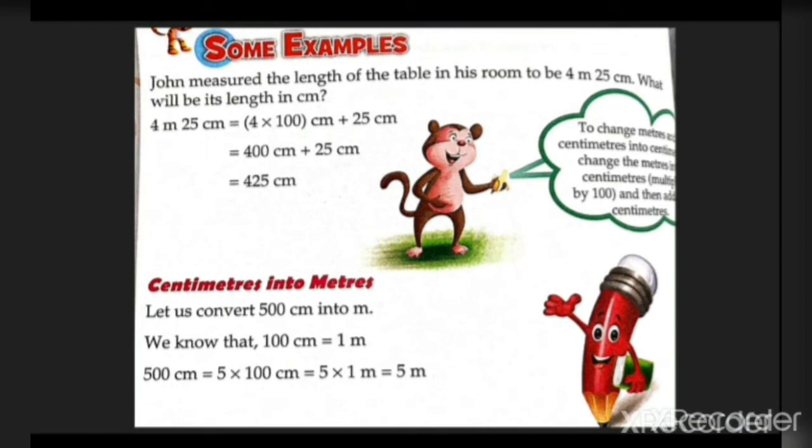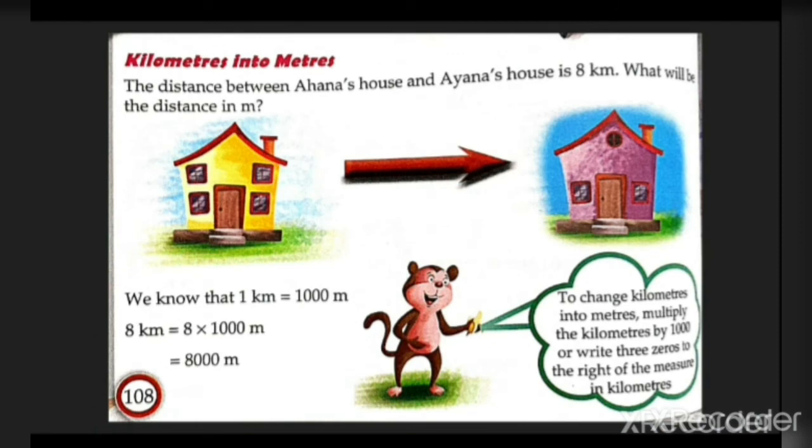Converting cm into meters: let us convert 500 cm into meters. We know that 1 meter is 100 cm. Now, 500 cm is 5 times 100, so 5 times 1 meter equals 5 meters.